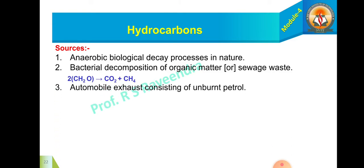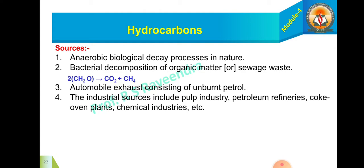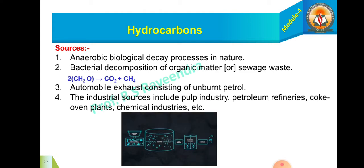It serves as a primary air pollutant. Third source for the hydrocarbon is automobile exhaust consisting of unburnt petrol. The fourth hydrocarbon source is the industrial source which include pulp industry, petroleum refineries, coke oven plants, chemical industries, etc.